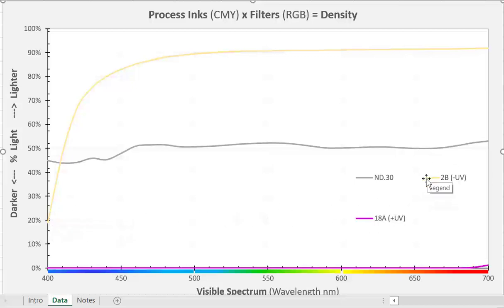Now, two specialty filters. There's a 2B filter. This absorbs UV light, so it filters out or cuts out the UV light. And there's an 18A filter that allows only the UV light to pass through.